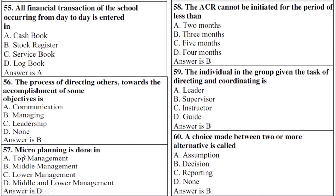Question 57: Micro planning is done in — right option is D: middle and lower management. Question 58: The ACR cannot be initiated for the period of less than — right option is B: three months.